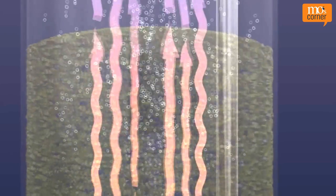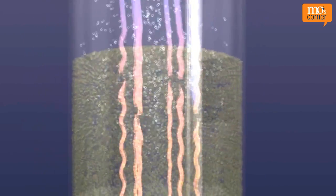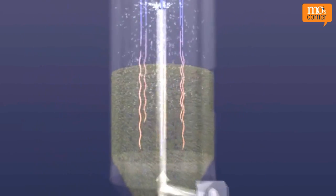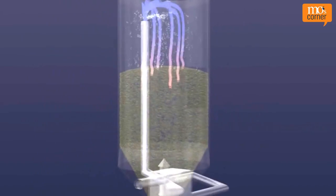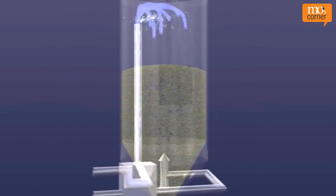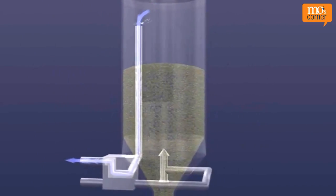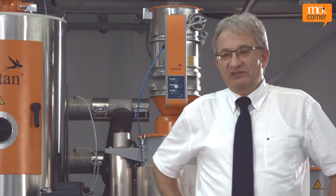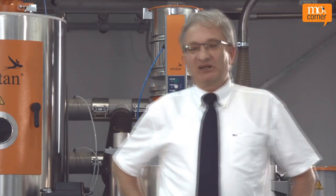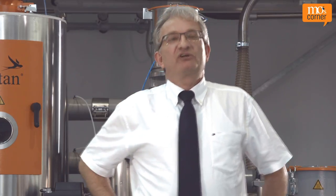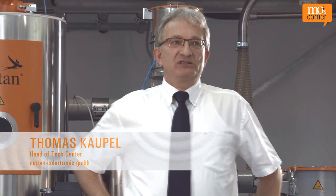In plastics processing, the moisture content of the granules plays a huge role in the quality of the end product and the process safety. This moisture in the granules can really cause serious problems during processing.